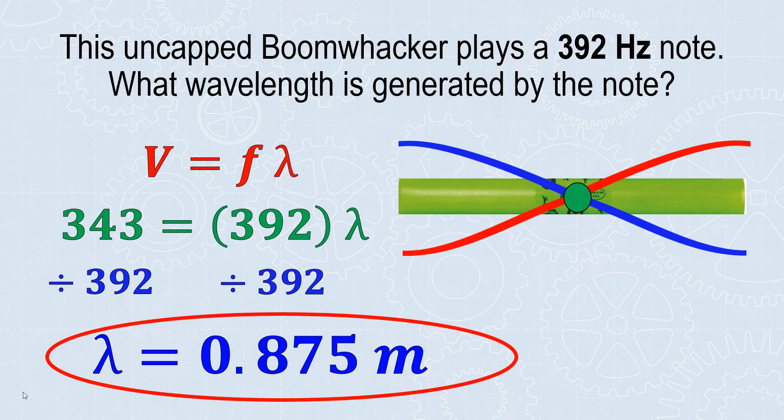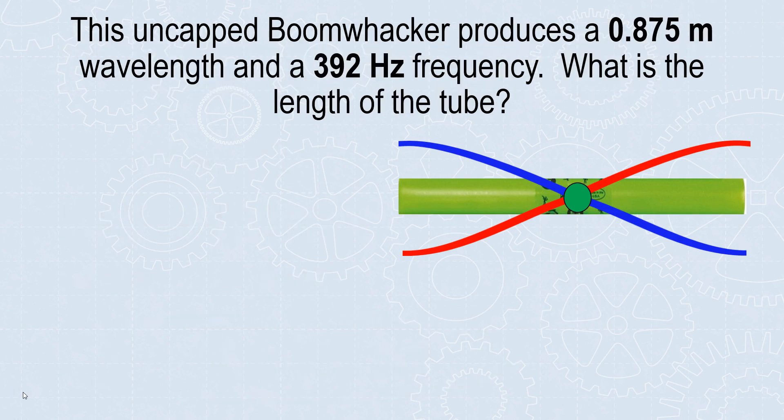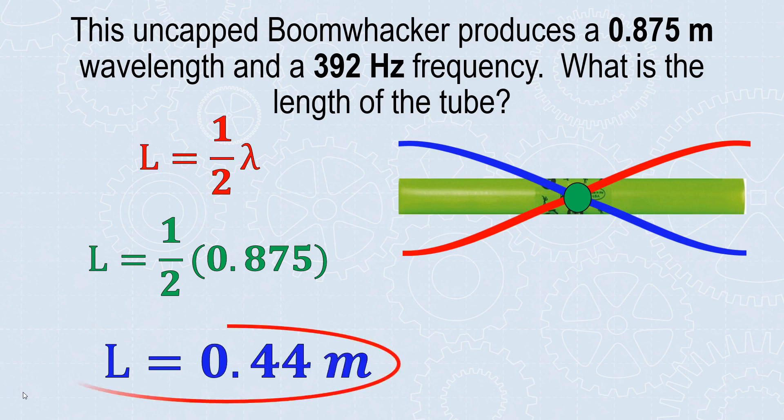Now that I have the wavelength, it's asking how big to cut the tube. This is how instruments are made. We know there's half a wavelength in an uncapped tube. So the tube length equals half the total wavelength. Half of 0.875 gives a tube length of about 0.44 meters. If you wanted to play a note at 392 Hz on a boomwhacker, you'd cut it to 0.44 meters.